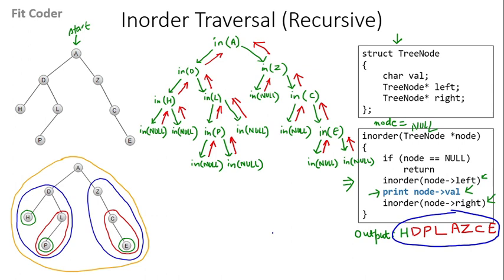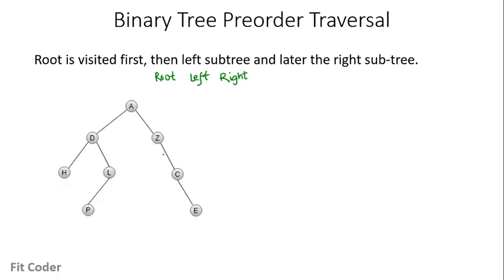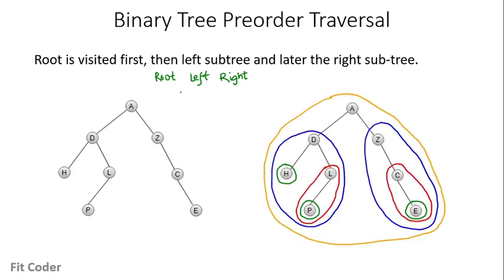Now let's see the next traversal: pre-order traversal. In pre-order traversal, we visit the root first, then visit the left subtree, and last we visit the right subtree. For this tree, we decompose it into subtrees. The first step is to print the root A, then we go to the left and reach the blue subtree, print root D, then reach H and print its value, then go to the right subtree of D highlighted in red, print L, then print left node P. Once everything on the left is processed, we reach the right side and print Z, C, and E.